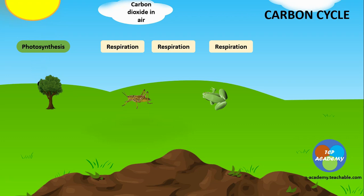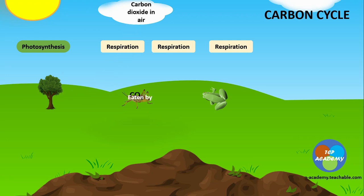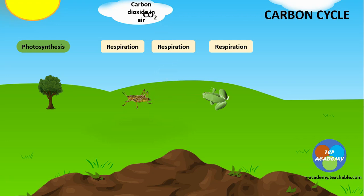Carbon gets into the living world through photosynthesis, called carbon fixation. The plant uses this carbon dioxide to produce glucose, and that glucose is moved through the ecosystem via a food chain.